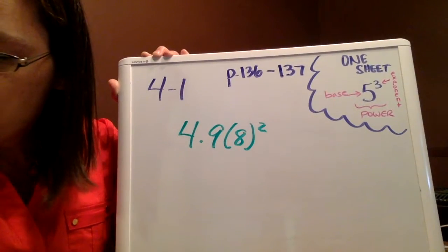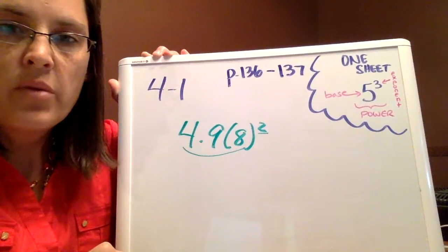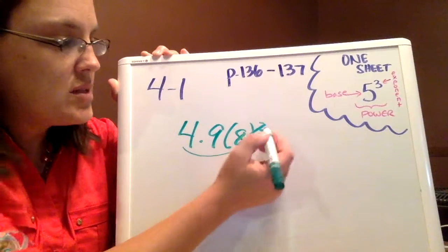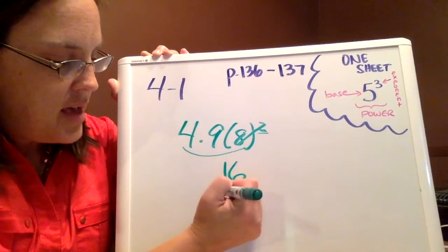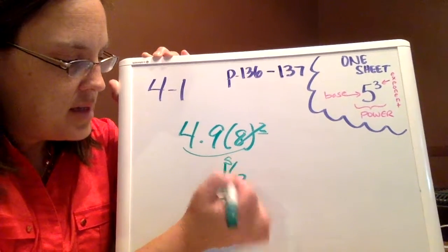Now, you might be tempted to multiply this first and then square it, but remember the order of operations tells us to square first. So 8 squared is 16, and 16 times 4.9 is...